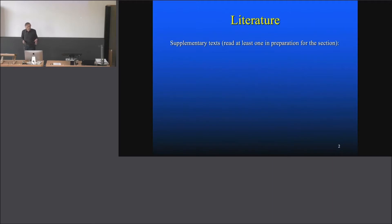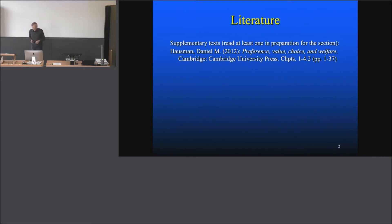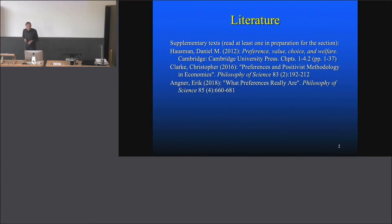The literature on this is all supplementary texts. The discussion has been quite strong within the last decade or two. There's a text I'm referring to from Haussmann — it's a book and three and a half book chapters. And then there is a rather recent journal article, 'Preference and Positivist Methodology in Economics.'